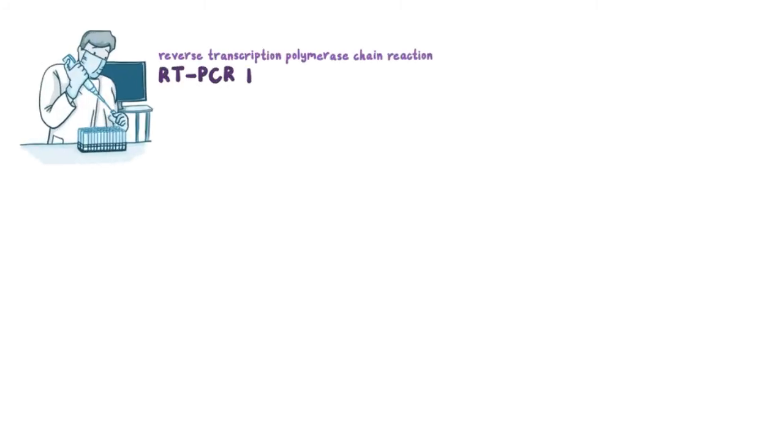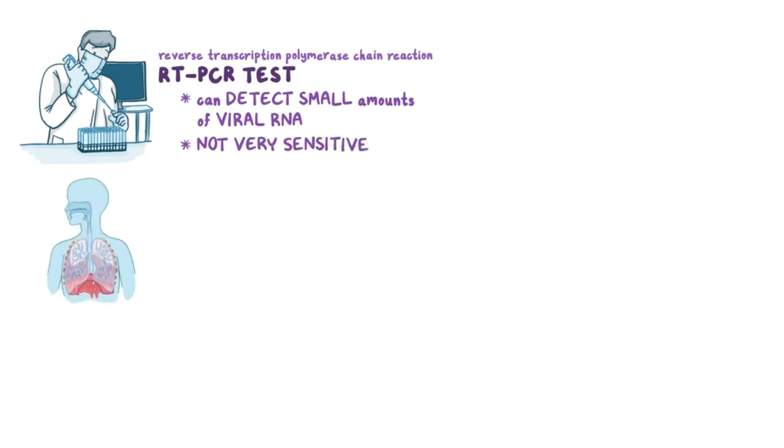To confirm the diagnosis, a reverse transcription polymerase chain reaction, or RT-PCR test, can be done which can detect very small amounts of viral RNA. It's worth mentioning, however, that early in the disease, the RT-PCR can often miss the infection altogether, meaning that it's not very sensitive. So if severe pulmonary disease is suspected, a chest CT can be done to help detect the presence of a viral pneumonia.